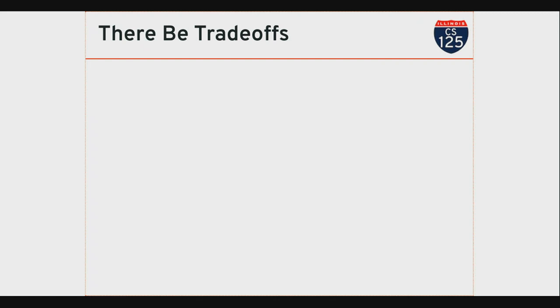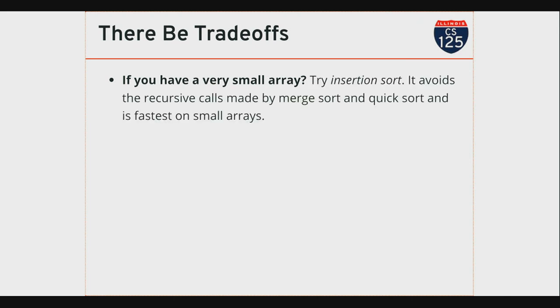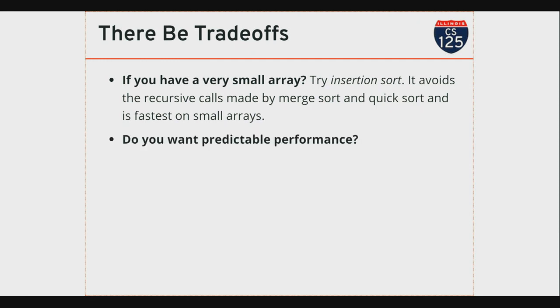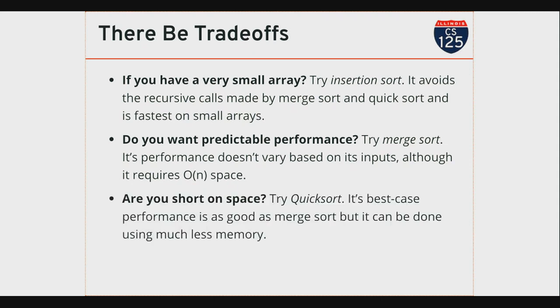Space usage: insertion sort uses very little space; quicksort uses O(log N) because of the recursive calls — every partition only needs constant space but you do log N partitions. This is one of those cases in your career as a computer scientist where you're faced with trade-offs. If you have a small array, insertion sort can actually perform faster with less setup time. If you want really predictable performance, merge sort requires a lot of space but gets you that. If you're really short on space, quicksort is a good option.